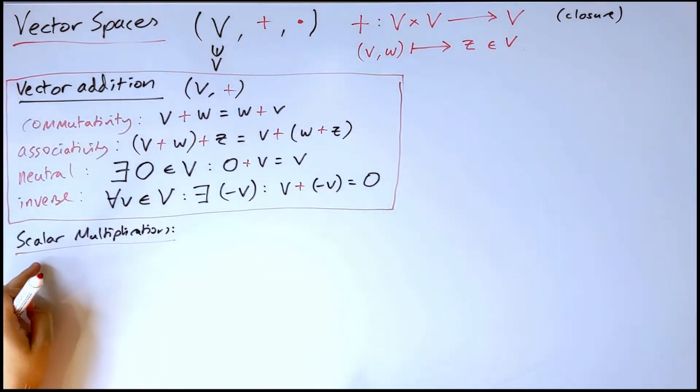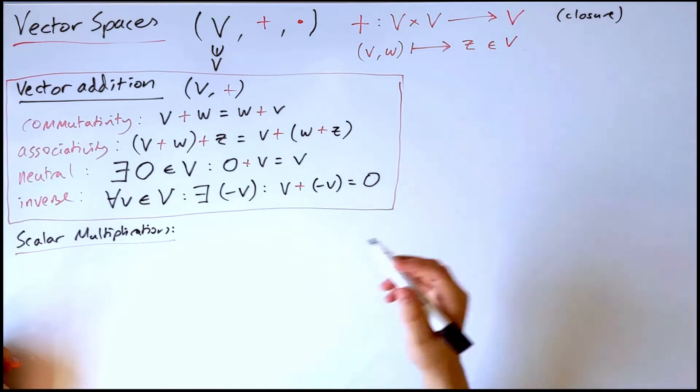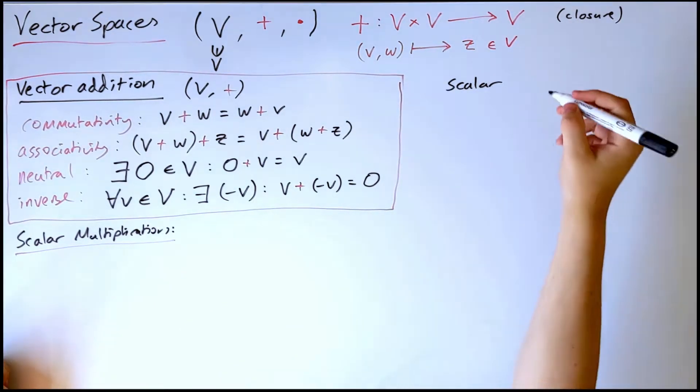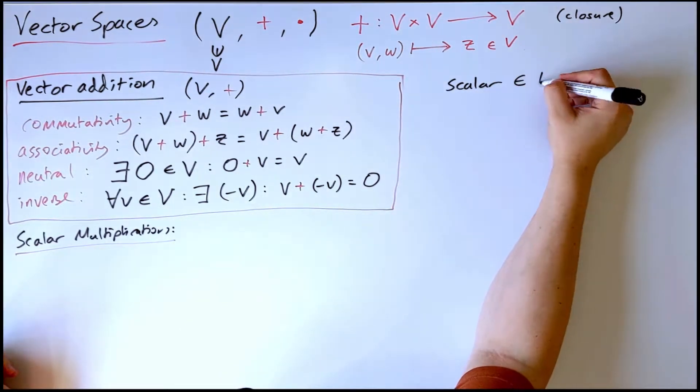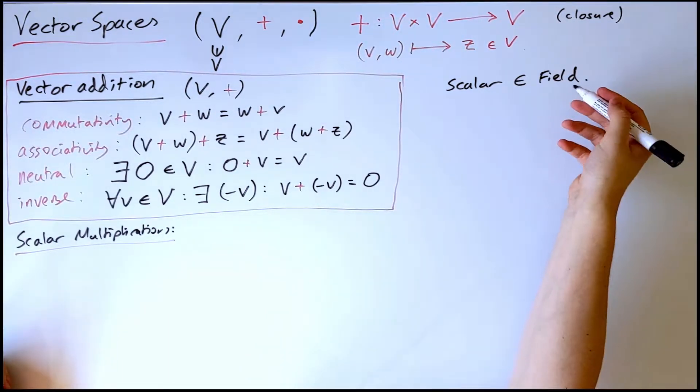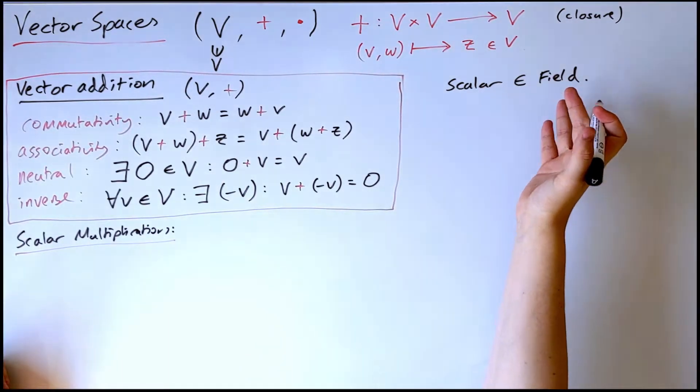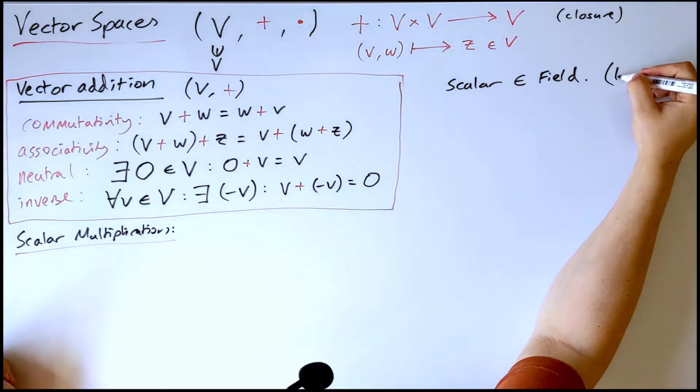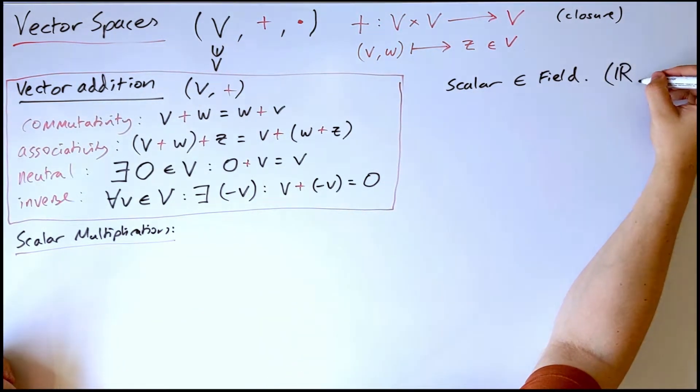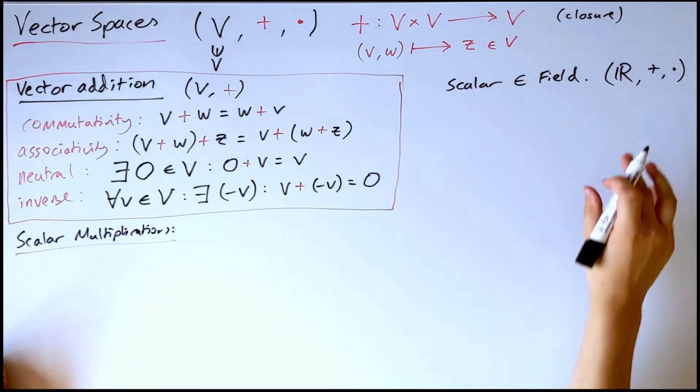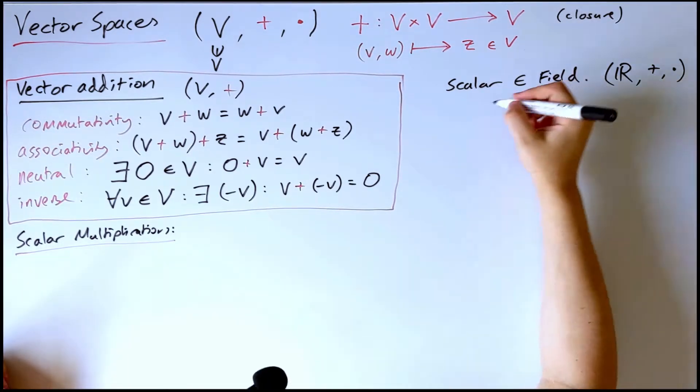So before I can tell you what scalar multiplication is, I need to tell you what a scalar is. Now, I'm not going to want to go into too much detail about this, because it's fairly self-explanatory and it's just going to be laborious to go through the details. But a scalar, I'm going to say, is an element of something which we call a field. Now, a field is just another type of algebraic structure. It's just a set, for our case, I'm going to call it R.